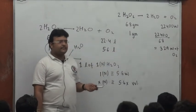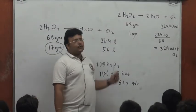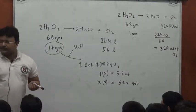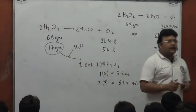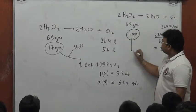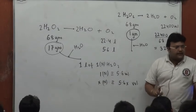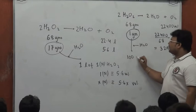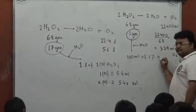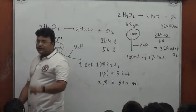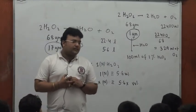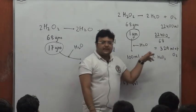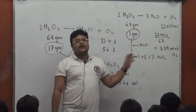Take 1 gram of pure H₂O₂ and add enough water to make it 100 mL. That gives a solution of 1 gram per 100 mL, so I can call it a 1% solution. This 100 mL of solution is potentially capable of producing 329 mL of oxygen. What will be the volume strength?